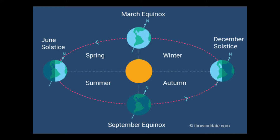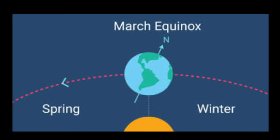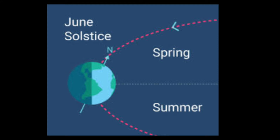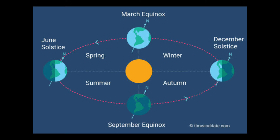Bakit? It is because the sun shines directly on the southern hemisphere and indirectly naman doon sa northern hemisphere. Doon sa March naman, it is fall at the south of the equator and spring at the north of the equator — halos equally lang ang pagsikat ng araw sa southern and northern hemisphere. However, noong June, it is winter on the south of the equator and summer naman doon sa north of the equator, because the sun shines directly on the northern hemisphere and indirectly on the southern hemisphere.